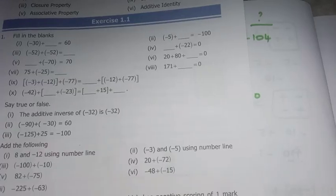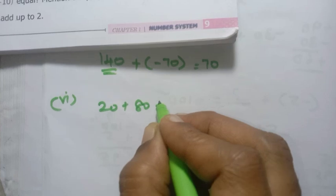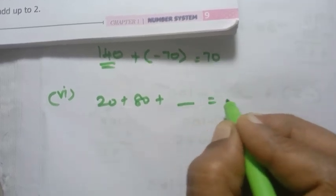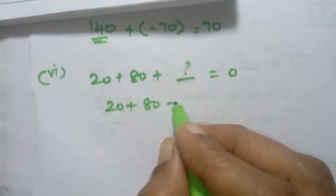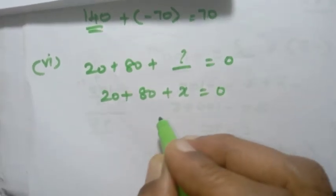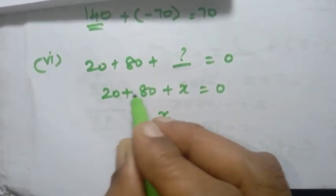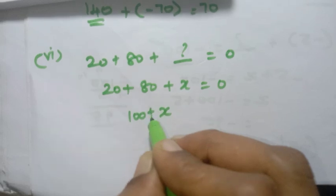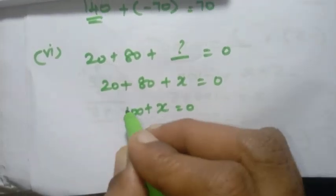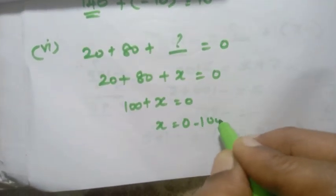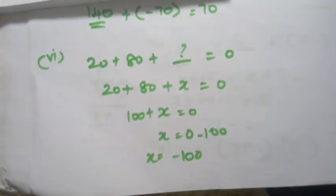Sixth sum: 20 plus 80 plus x equals 0. First, 20 plus 80 equals 100, so 100 plus x equals 0. Moving 100 across: x equals 0 minus 100, so x equals minus 100.